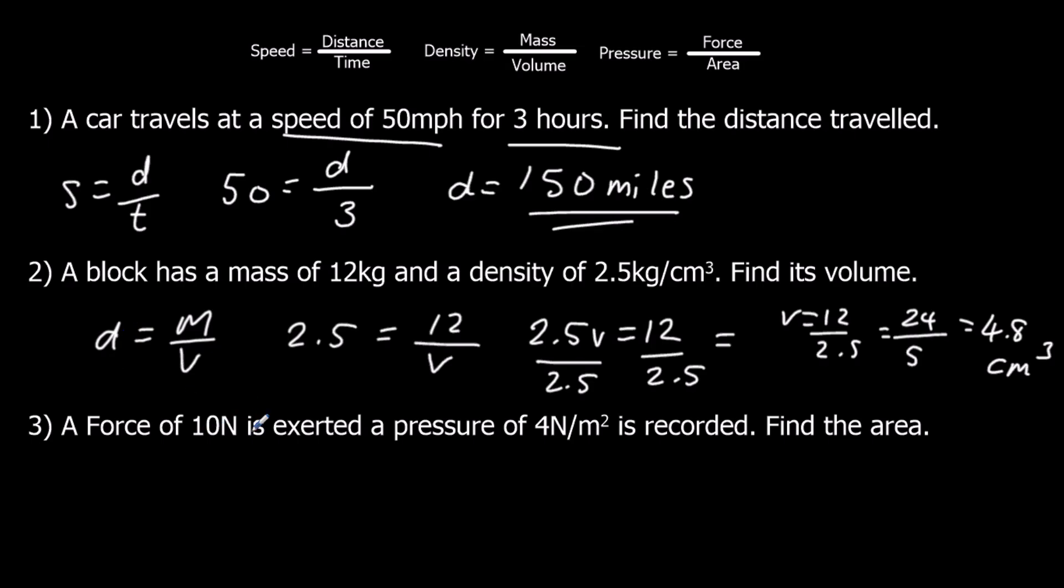A force of 10 newtons is exerted, a pressure of 4 newtons per meter squared is recorded. Find the area. Pressure equals force over area. I know pressure is 4, force is 10. If I times by A, I get 4A is 10, and then divide by 4. A is 2.5, and it's in meters squared.